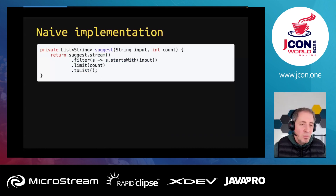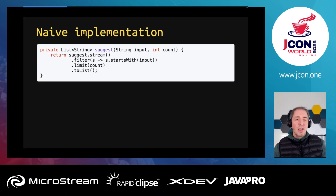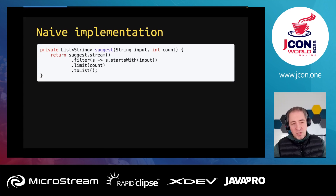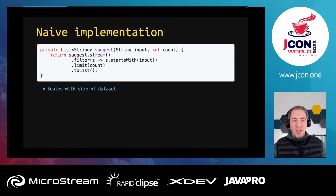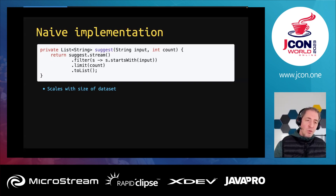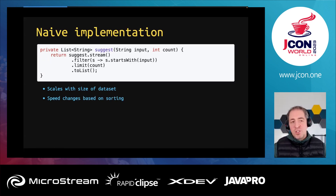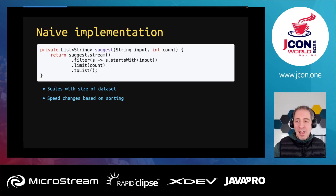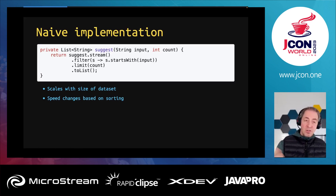The naive suggest implementation looks like this: stream over your list, filter if it starts with a certain input, limit to count, then convert to a list. This is the most naive implementation, but it has drawbacks. The biggest one: you don't want performance to scale with the size of your dataset, meaning the suggestion becomes slower over time. There's a difference between going through 1,000 elements versus 1 million. Speed also changes based on sorting.